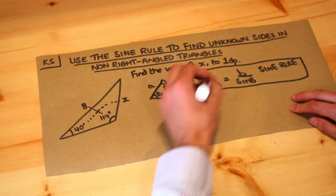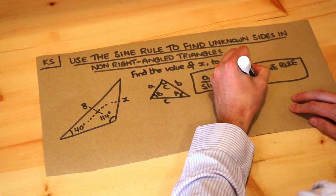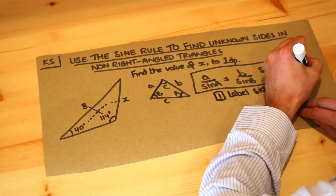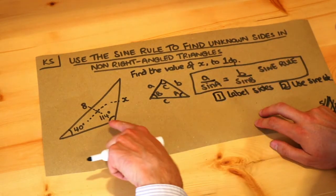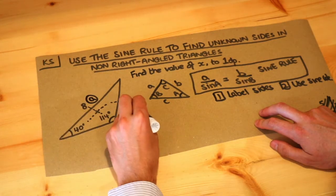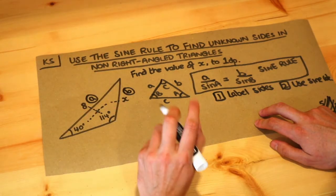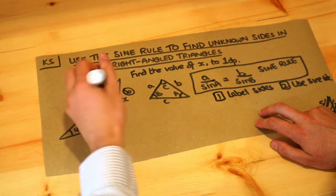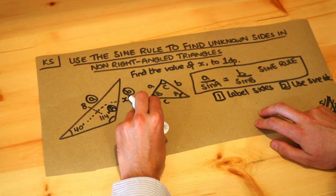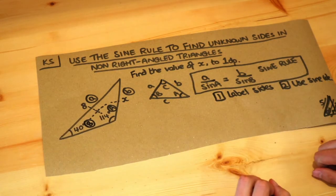All we need to do now is label this. Step one is to label your sides, and step two is to use the sine rule. We're going to use a and b, so this is going to be side a and the other side is side b. It doesn't matter which way around, however opposite side a has to be angle capital A and opposite side b has to be angle capital B. They have to match.